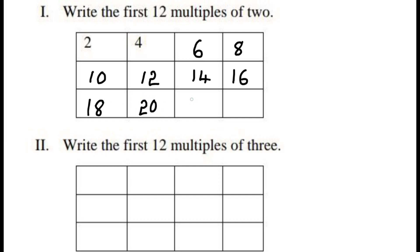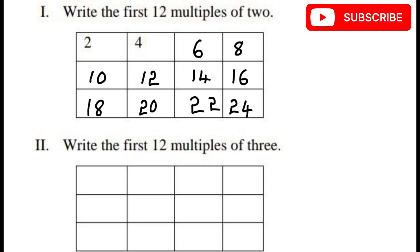Continuing, 2 times 11 is 22, and 2 times 12 is 24. So these are the first 12 multiples of 2. Similarly, let us write the first 12 multiples of number 3. The first multiple will be 3 itself, then 6, then 9, then 12.